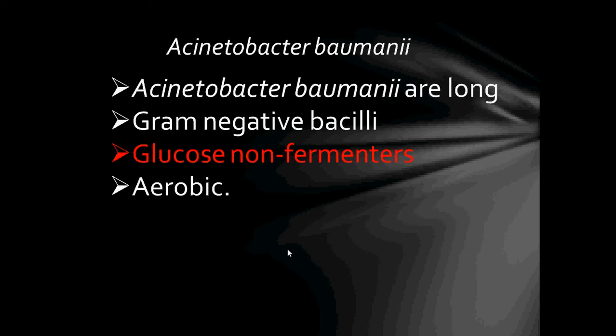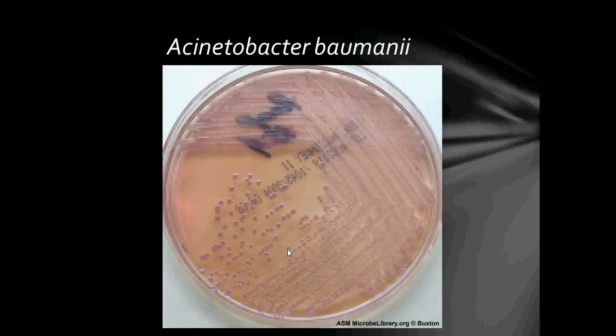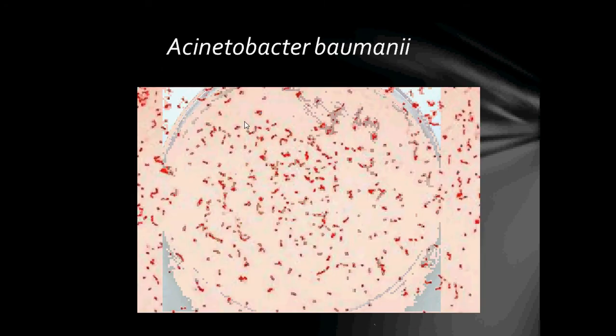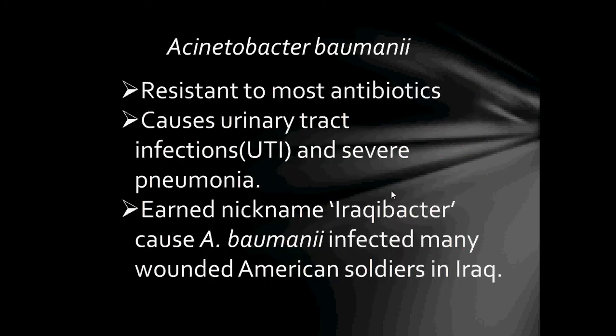Next bacteria: Acinetobacter baumannii. Acinetobacter baumannii are rod-shaped, gram-negative bacilli and are glucose non-fermenters. They are aerobic. This is Acinetobacter baumannii growing on MacConkey agar. They are resistant to most antibiotics and cause urinary tract infections and severe pneumonia. Acinetobacter baumannii earned the nickname 'Iraqi Bacter' because it infected many wounded American soldiers in Iraq.